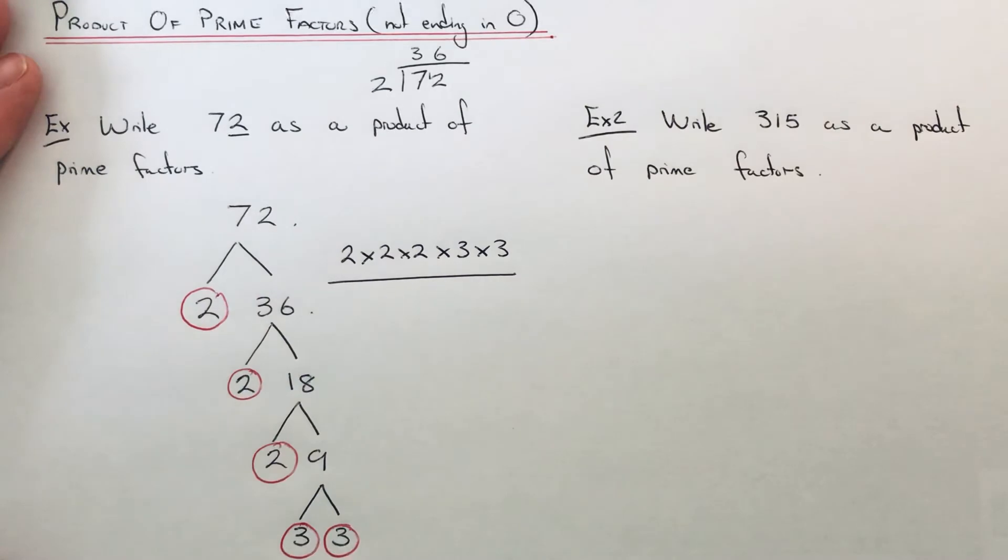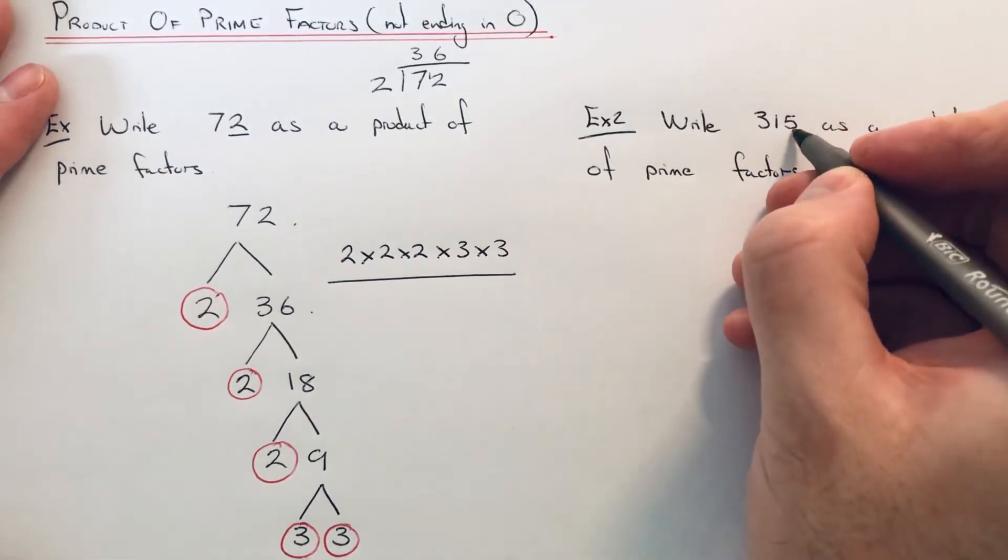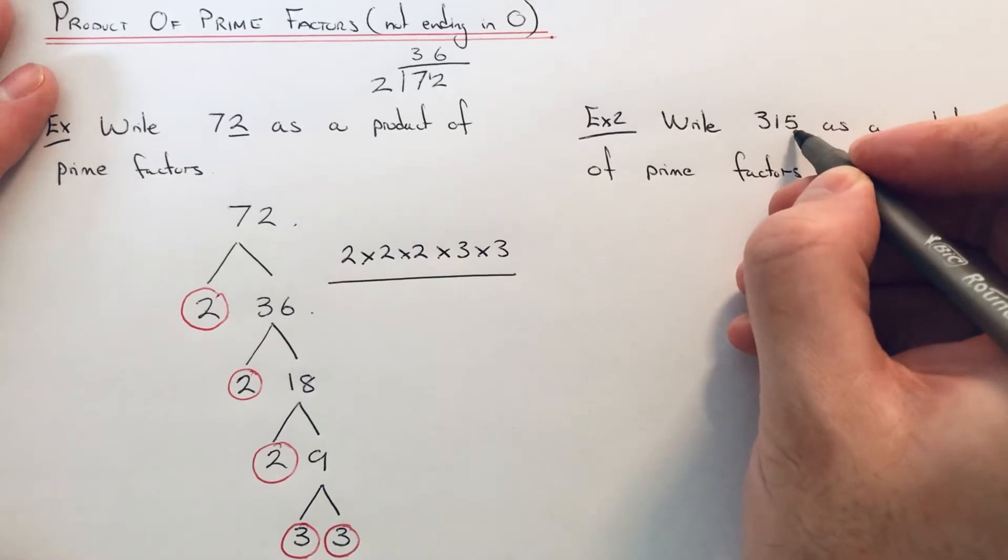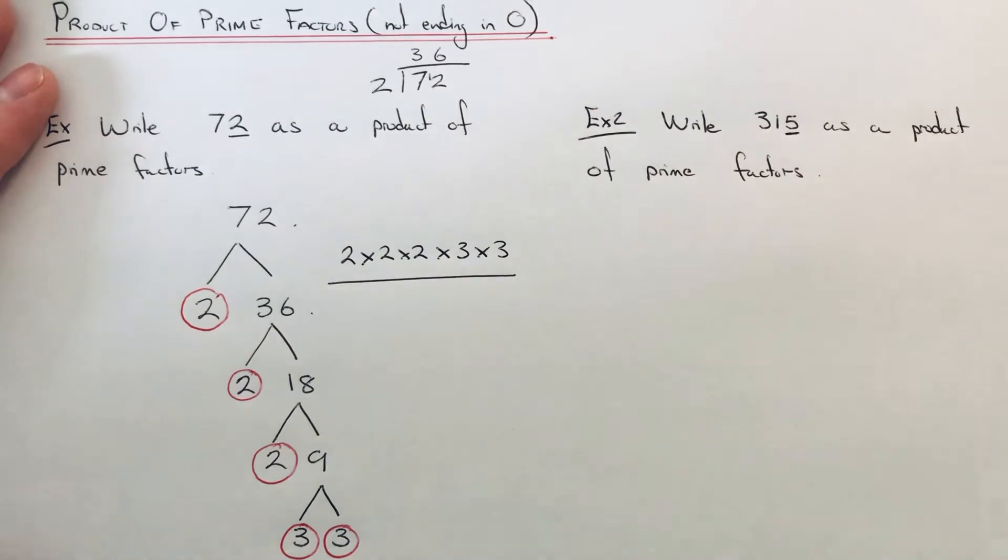Let's have a look at the second example. We've got to write 315 as a product of prime factors. This time it's not going to be in the 2's because it's not an even number, but since it ends in a 5 we know it's in the 5 times table.